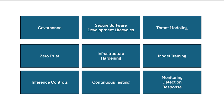We're going to need some secure software development life cycles, like we would in any other security architecture. We're going to need to do some threat modeling related to AI, in addition to what our team normally does. We'll need a zero-trust framework, infrastructure hardening, model training security, inference controls, and continuous testing and monitoring, detection, and response. This is the holistic full picture of the security architecture.